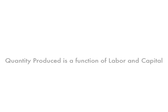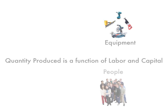It turns out quantity produced is a function of labor and capital. By capital we mean equipment, by labor we mean people. And we often write it like this: quantity is a function of labor and capital. We use K for capital.